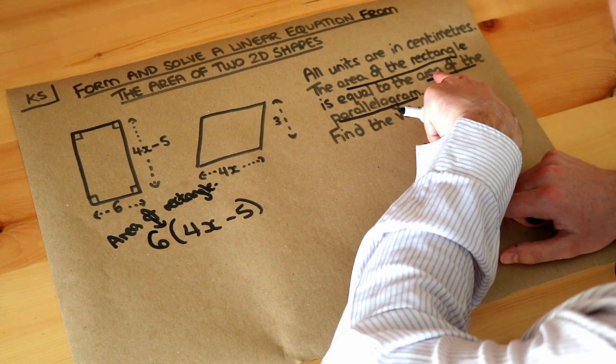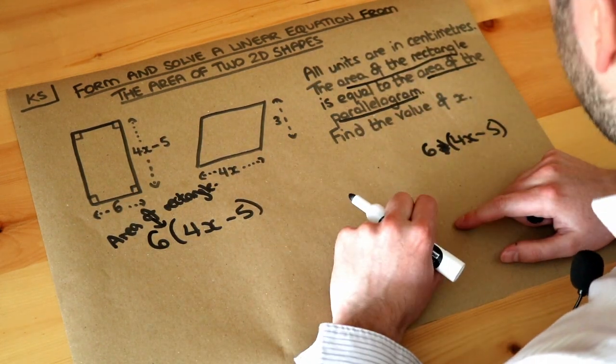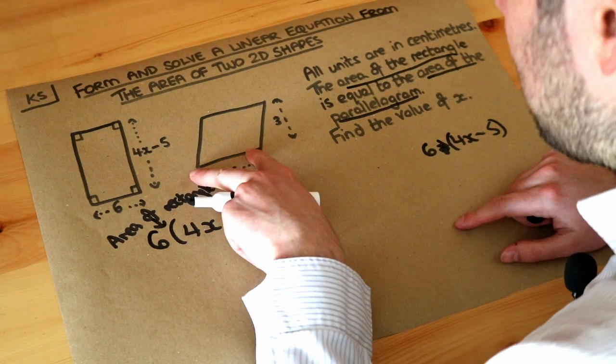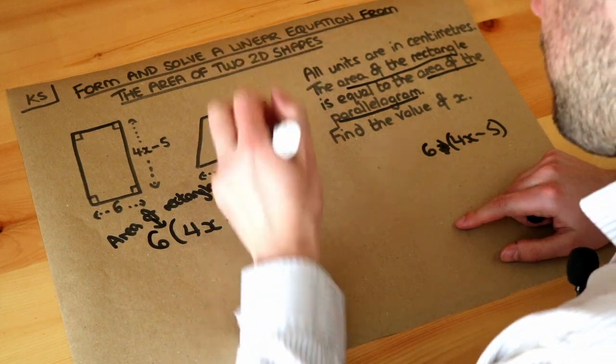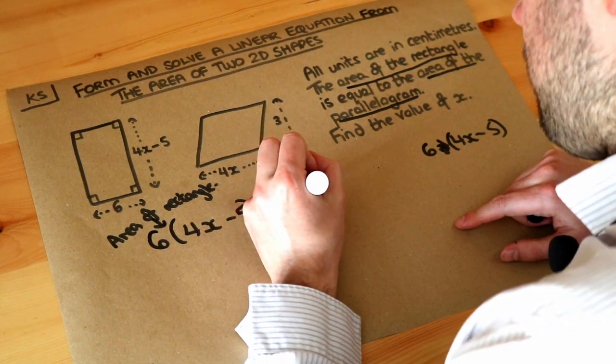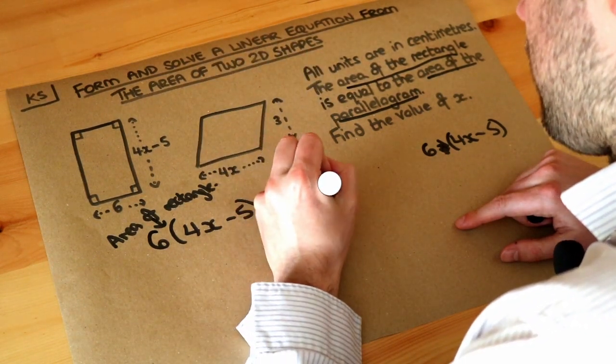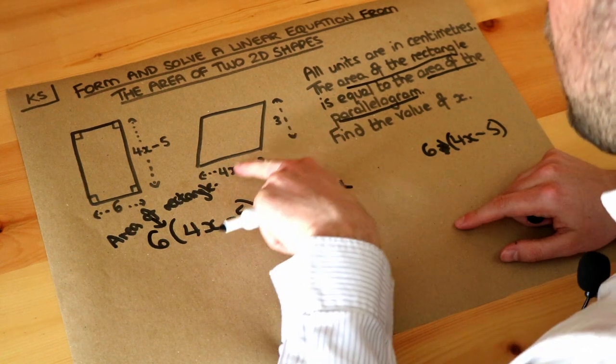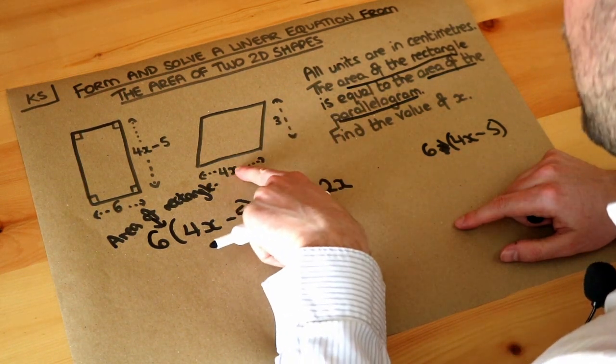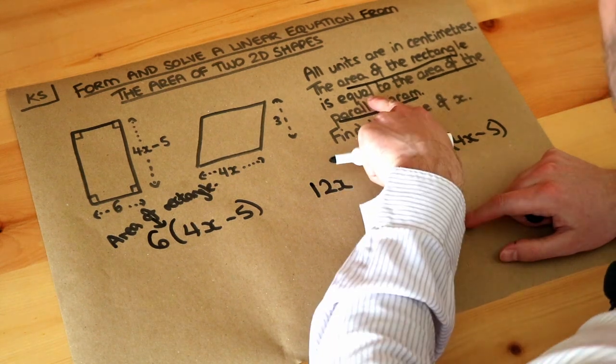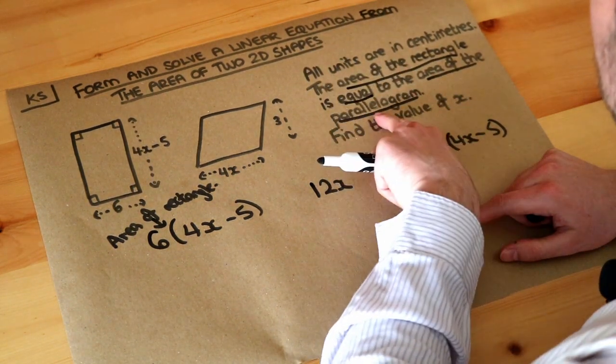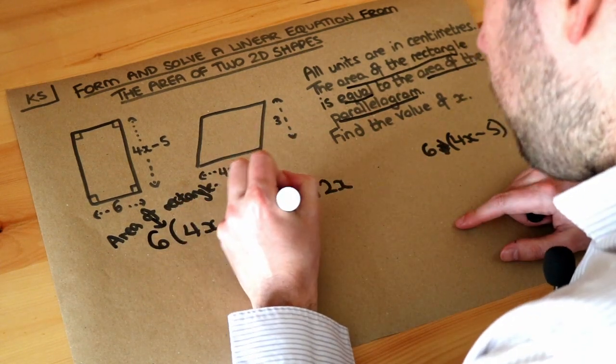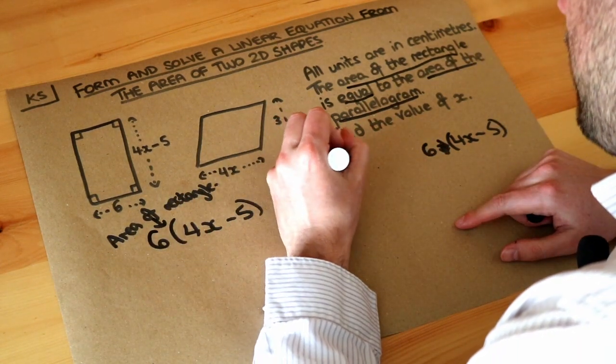And we also need the area of the parallelogram. The area of the parallelogram is just the base times the perpendicular height, which is exactly what we've got here. So we've got 4x times 3. So 4x times 3 is just 12x because 3 times 4 is 12 and you've also got that x. And you're told they're equal. So the area of the rectangle is equal to the area of the parallelogram.